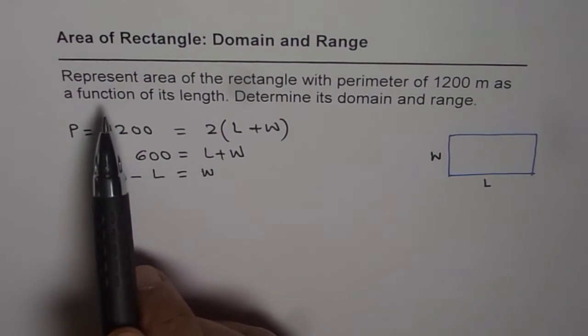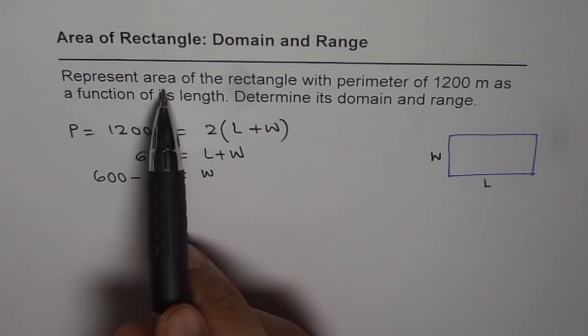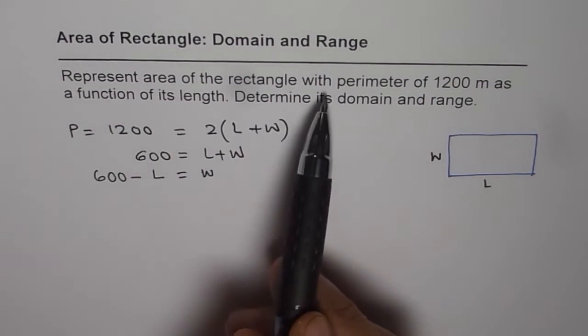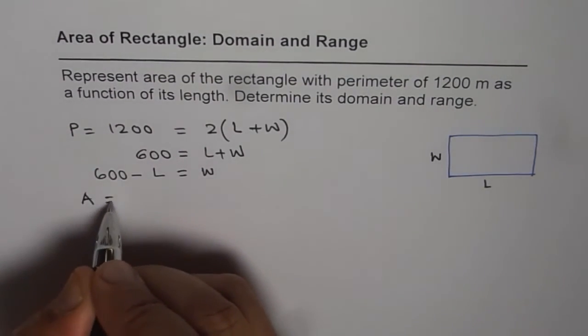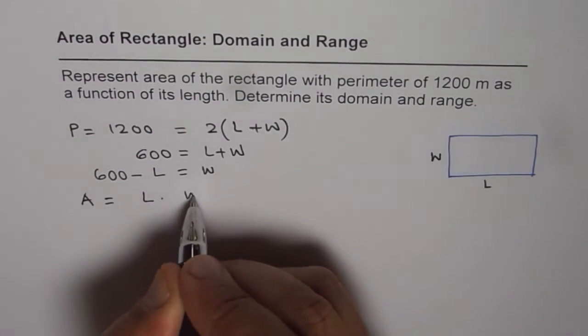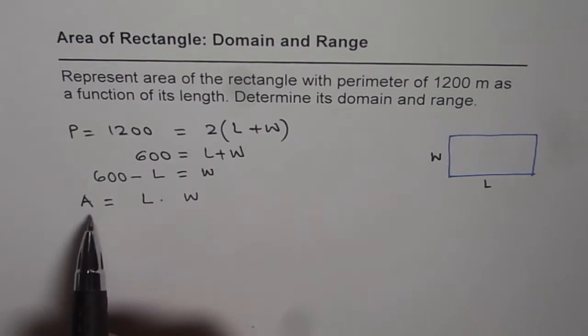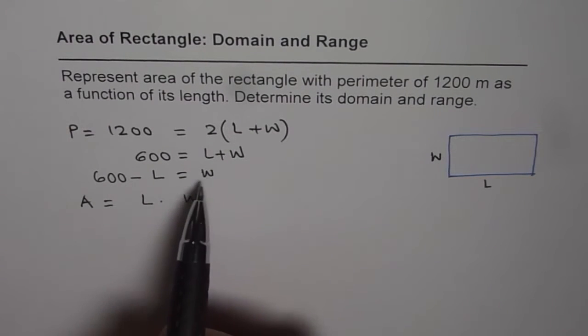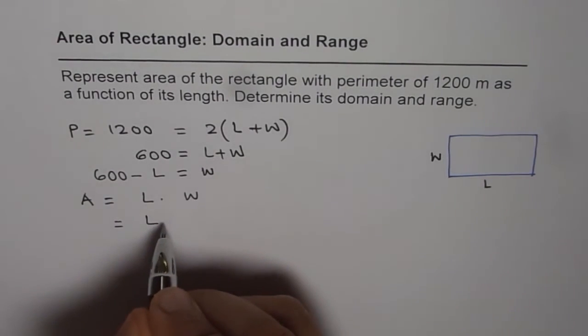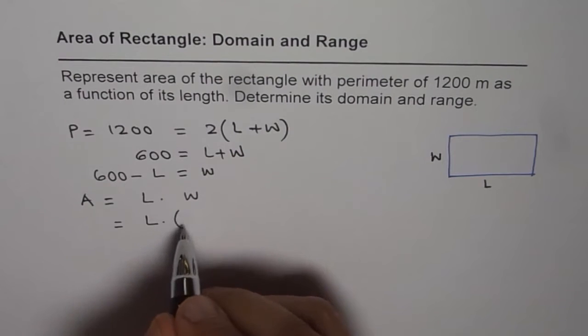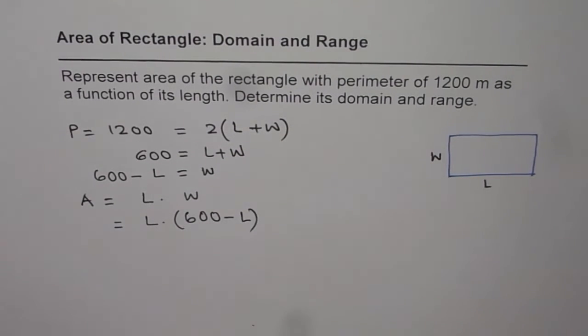The question is, represent area of the rectangle with this parameter as a function of length. Now, what is area? Area is length times width. Since we want independent variable as length alone, we'll replace width with length. So what we get actually is length times width we found is equals to 600 minus L.